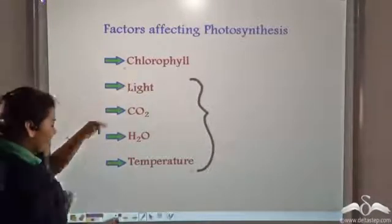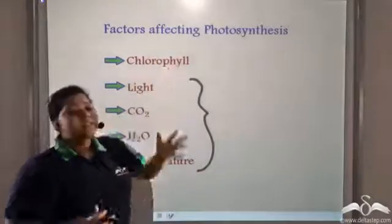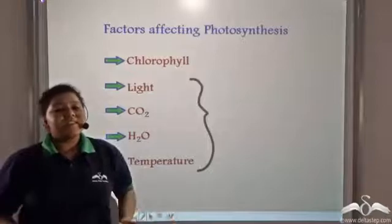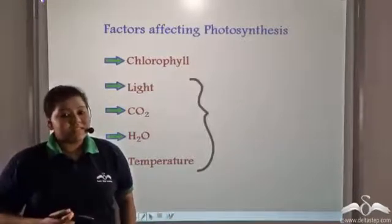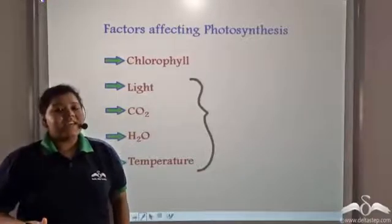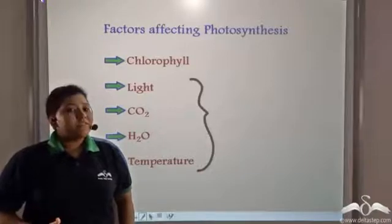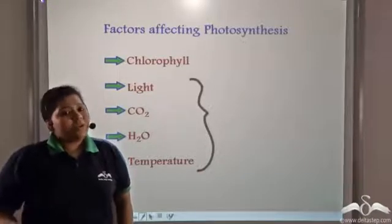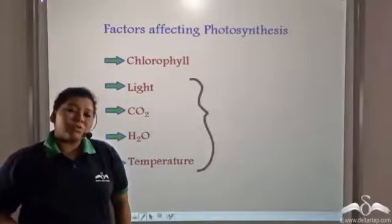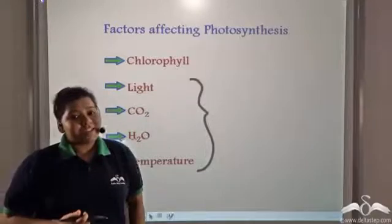But even this factor which is chlorophyll, even this reduces and increases with the different seasons. How? Well, there are some plants and trees which shed off leaves during particular seasons. Now if leaves are shed, then automatically the amount of chlorophyll will be less and so the rate of photosynthesis will be affected.